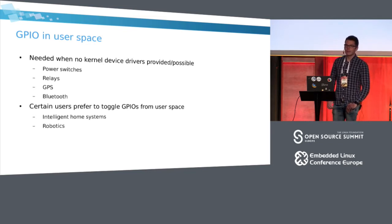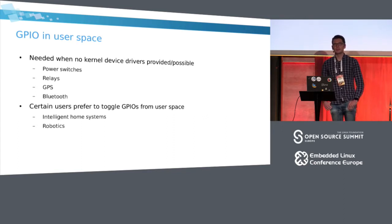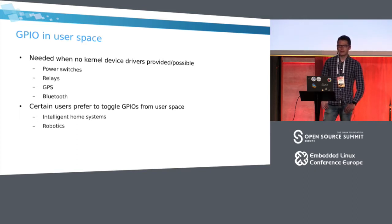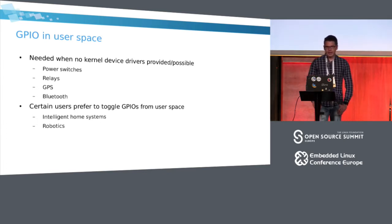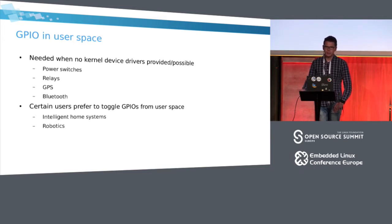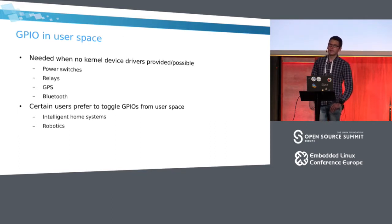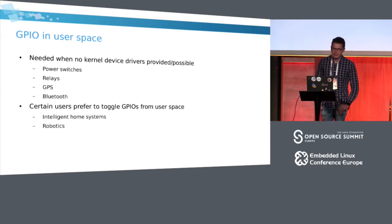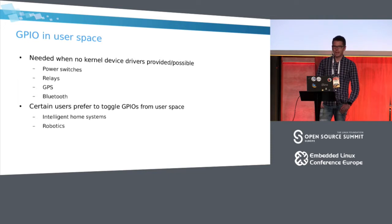Example use cases for user space GPIO include power switches and relays — there's currently no framework in the kernel for those. Certain devices like some GPSs and Bluetooth devices communicate over a serial port and export GPIO lines for things like reset. People involved with intelligent home systems like to implement everything in user space and toggle GPIOs to close window blinds, for example. Another area where GPIOs are used from user space is robotics.